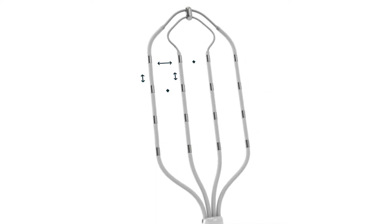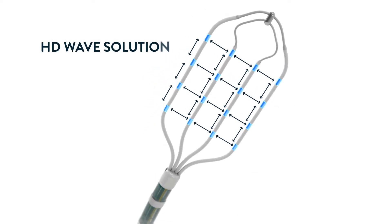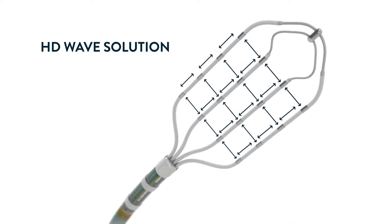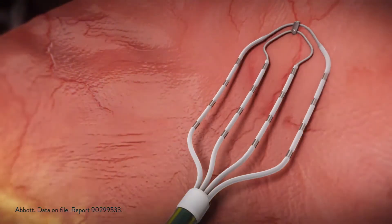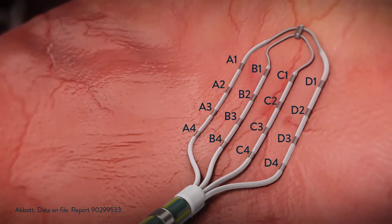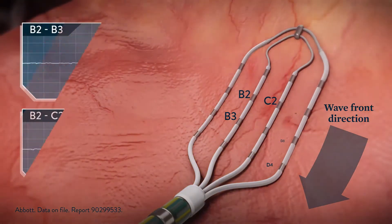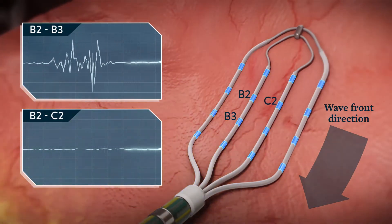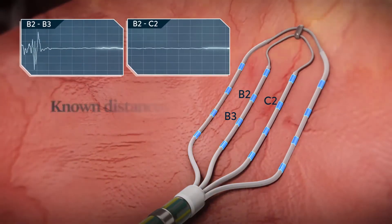To overcome poor orientation to the wavefront, the Advisor HD Grid Mapping Catheter, Sensor Enabled, has equidistant spacing, allowing an HD wave bipole recording along and across the splines. The unique grid design of 16 electrodes allows for rapid data collection from multiple bipolar combinations in a given location. HD wave selects the highest amplitude electrogram from two orthogonal bipoles, reducing directional sensitivity.